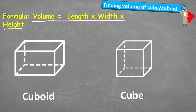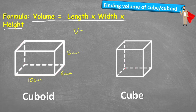Let's have a look at this first cuboid. Its length is 10 centimetres, its height is 5 centimetres, and its width is 6 centimetres. We can put these into our formula and say that volume is equal to length times width times height.